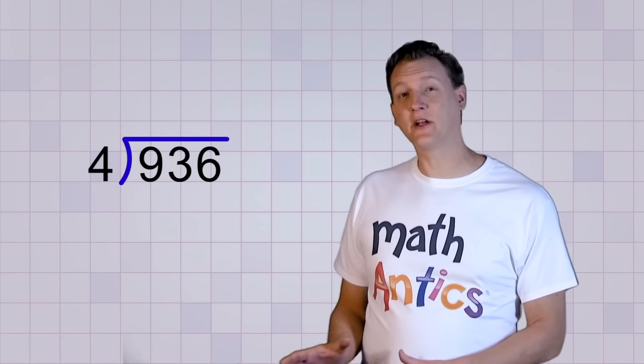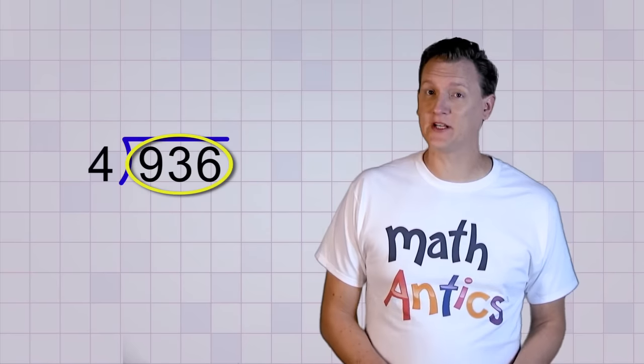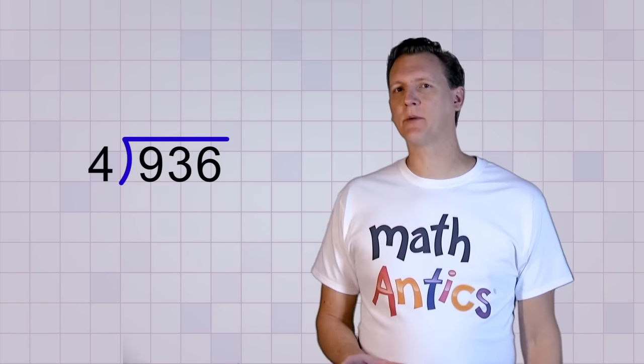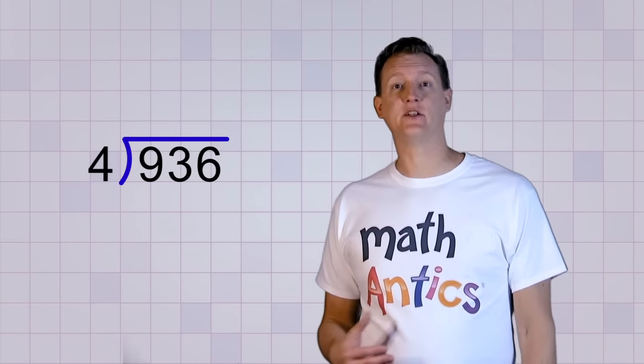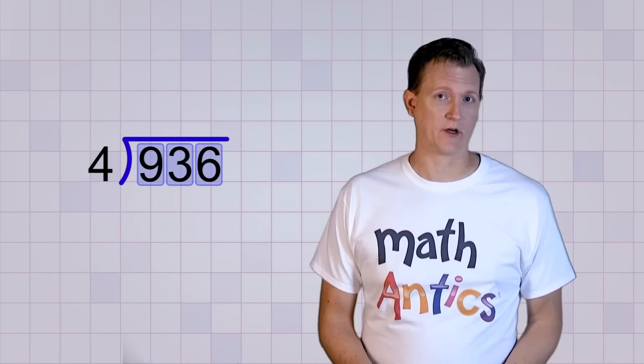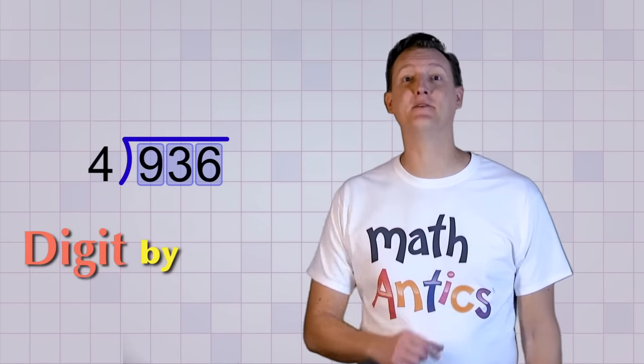Well, instead of trying to divide the entire 936 by 4 all at once, let's break this problem up into smaller steps by just trying to divide each digit by 4, one digit at a time, digit by digit.